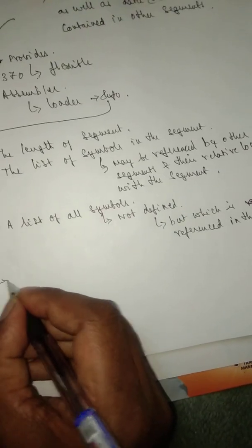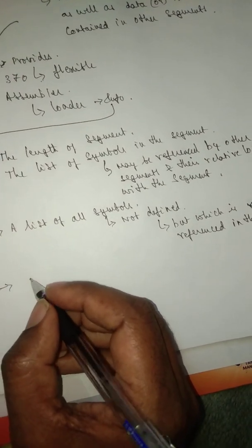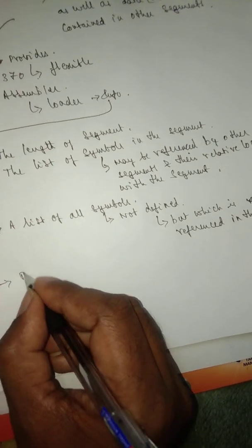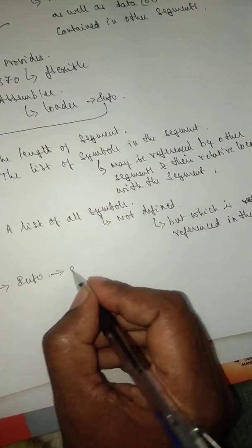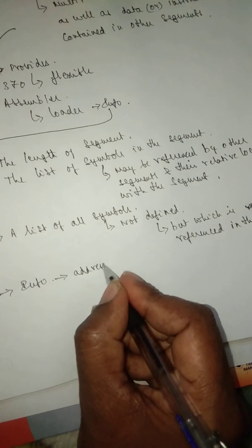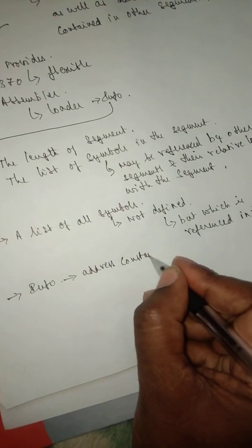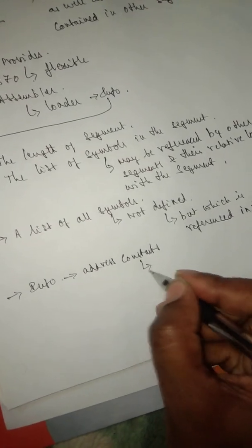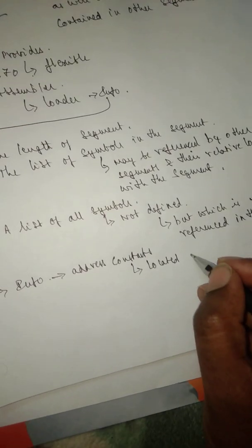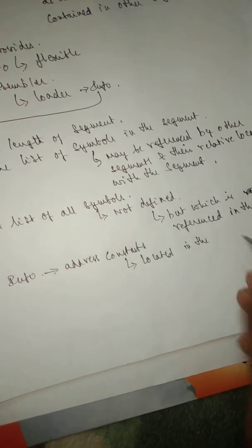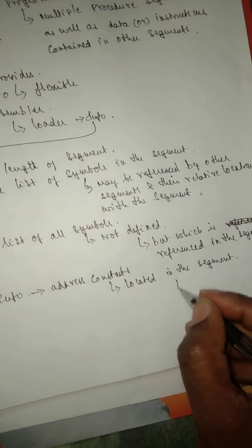And the fourth information is where the address constants are located in the segment, with their values.